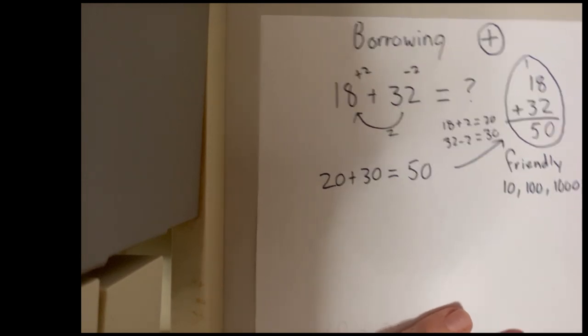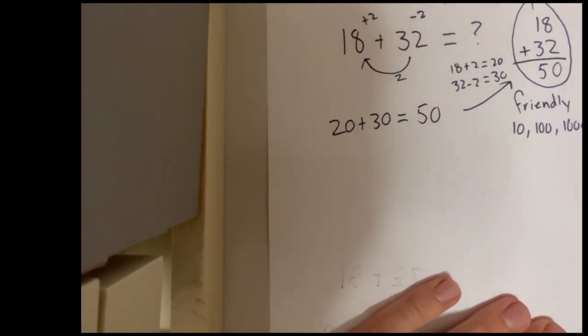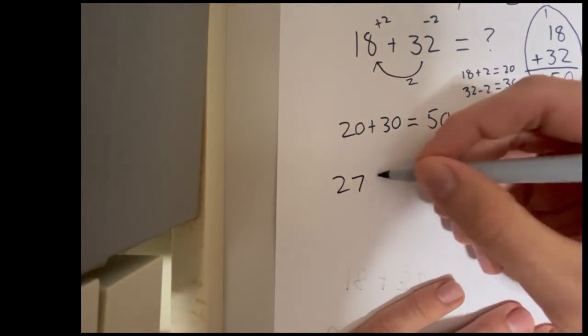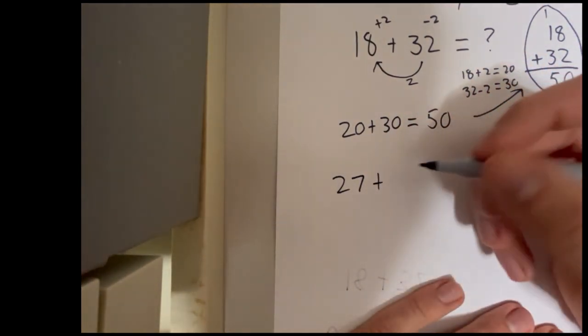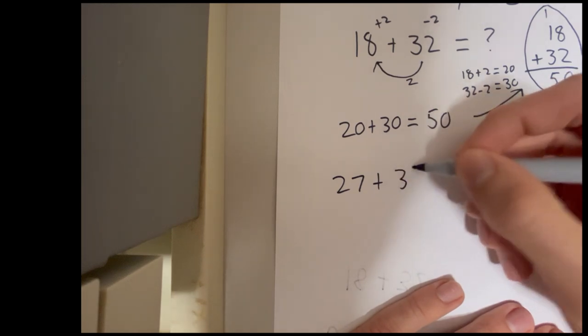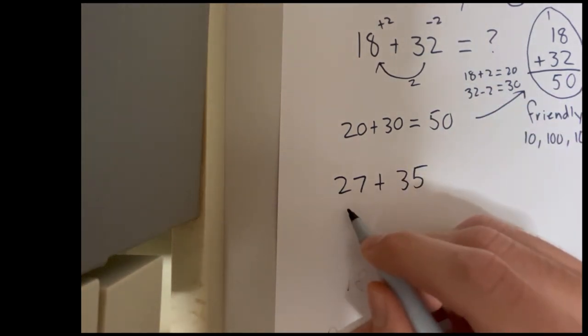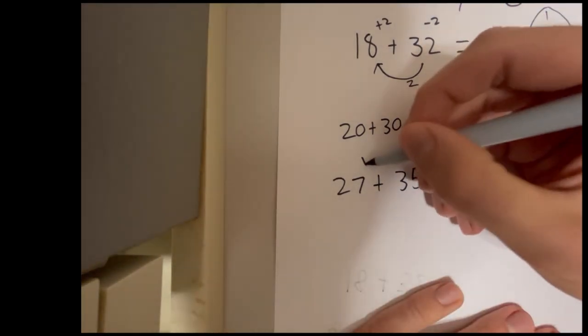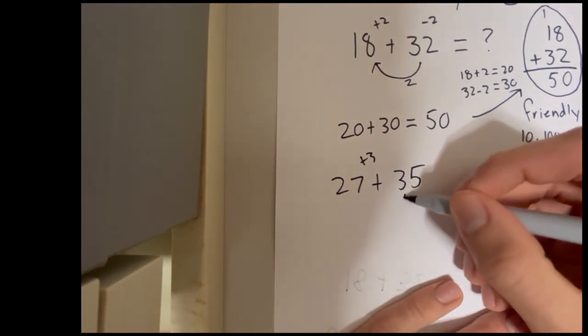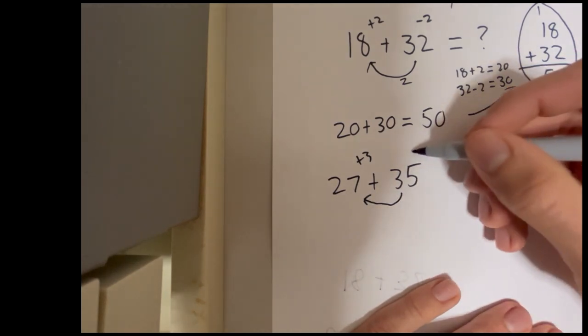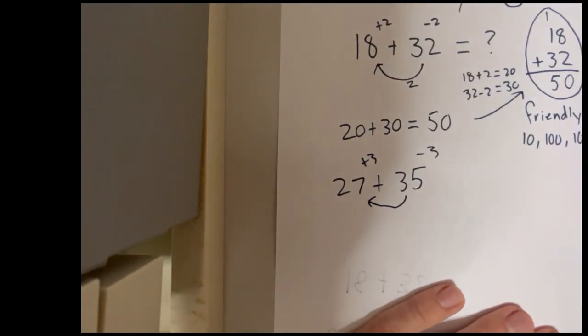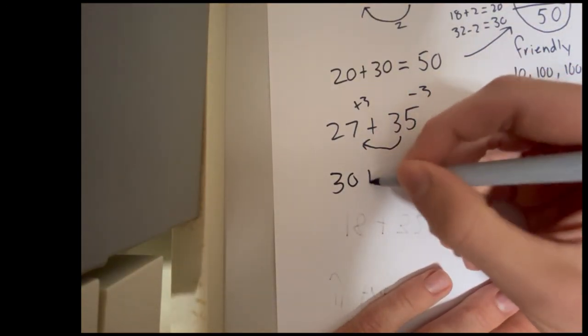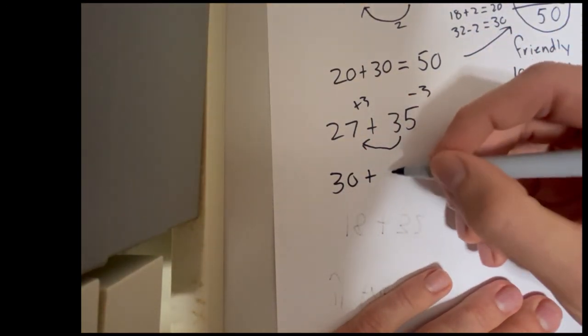And we can do it more often with different equations. So if we looked at 27 plus 35, well, how can we get to the nearest 10 with our 27? Well, we need a plus 3. Let's borrow 3 from over here. We have to remember to minus 3 from 35. And that will give us 30 plus 32.